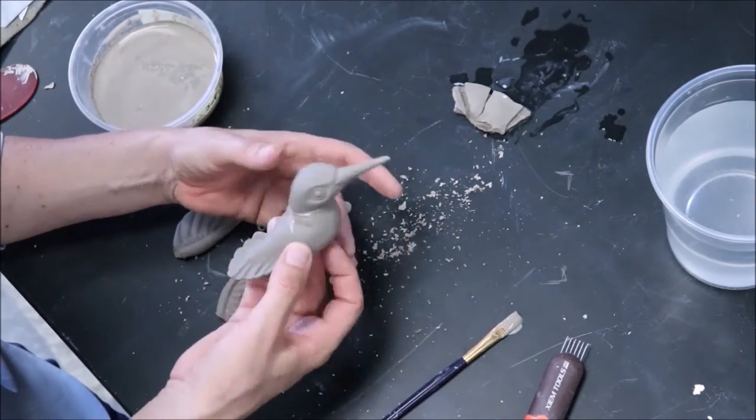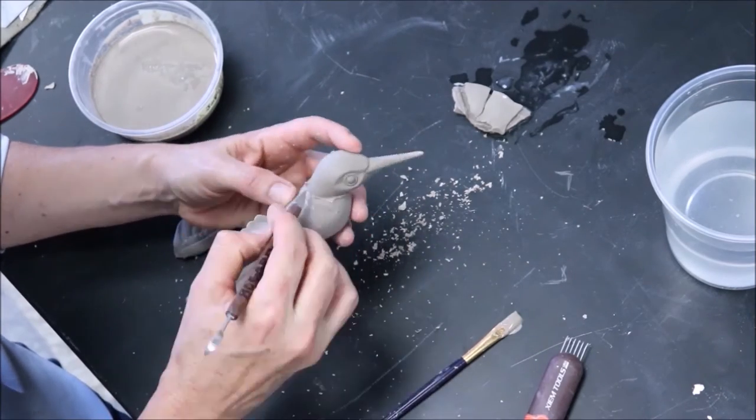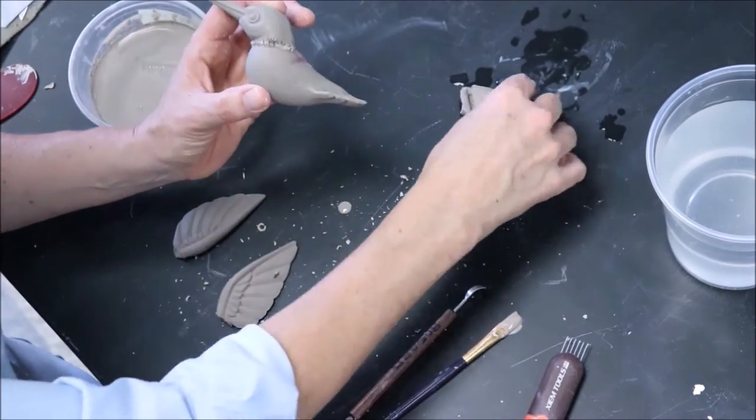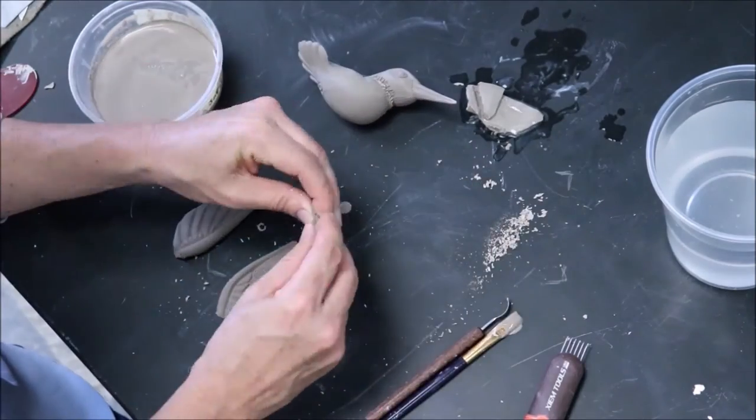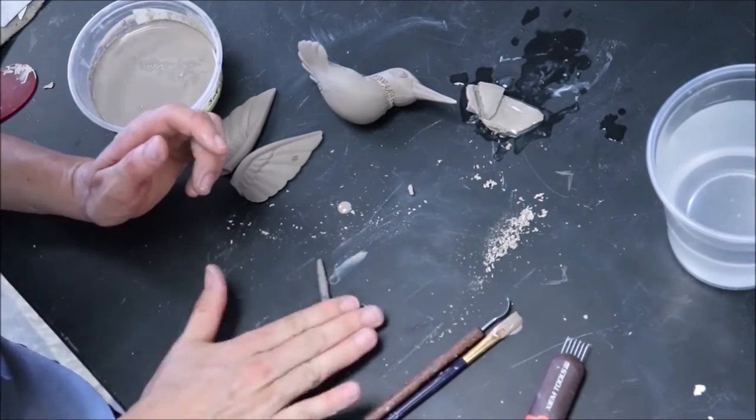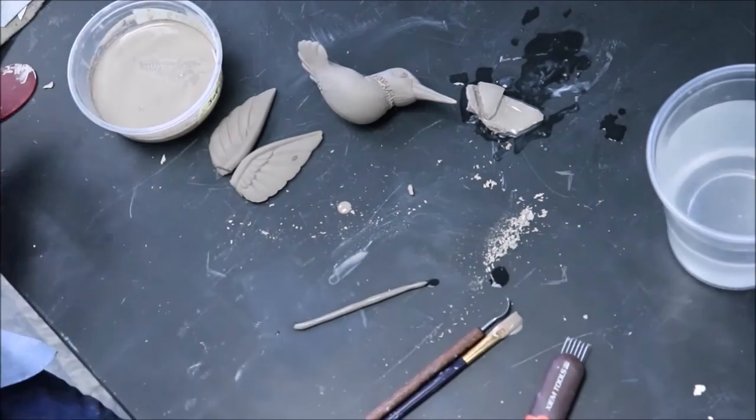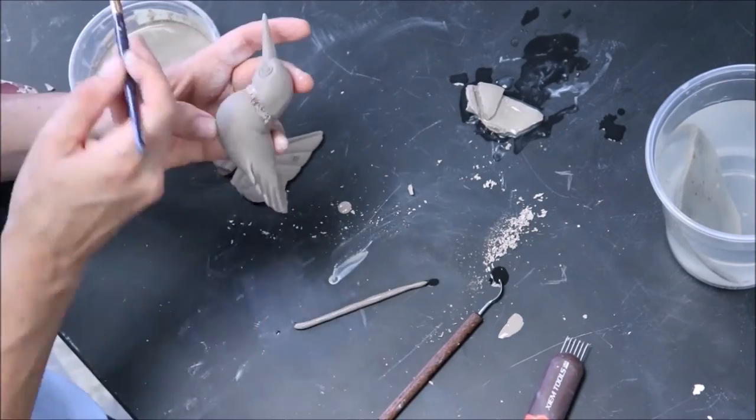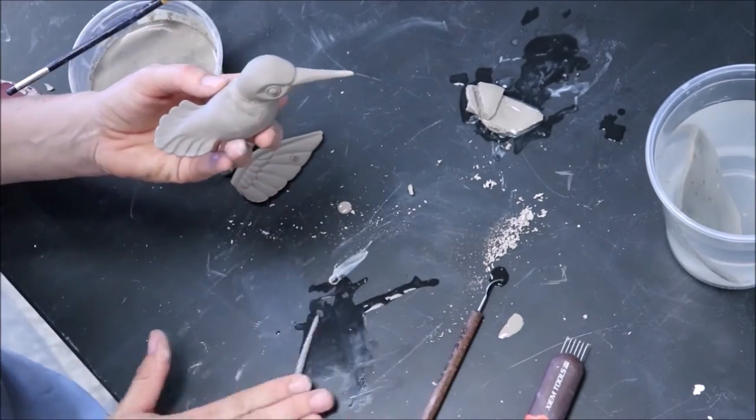The way slip casting works is that the plaster mold acts like a gigantic sponge. It sucks the water out of the slip and turns it into clay against the plaster wall. The plaster draws the water out of the slip evenly and consistently. That is, given that your mold is equal in size and density on both sides, which I explain in my mold making video linked below.